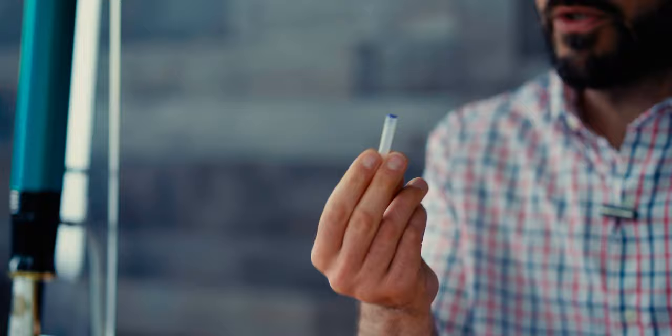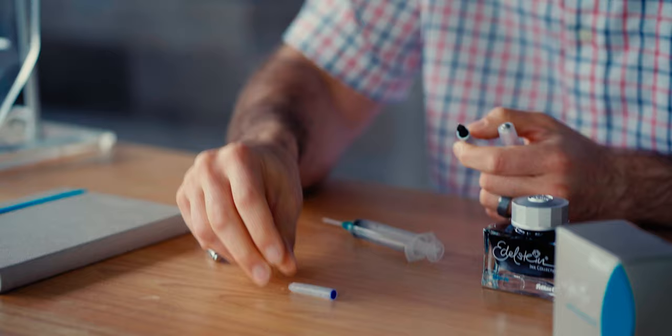What I have here is an empty Kaweco. It used to have blue ink in it. It's an ink cartridge with a little agitator ball inside, and usually whenever you would see a full ink cartridge, this is what it will look like. It's completely filled with ink.